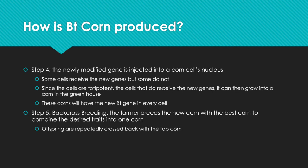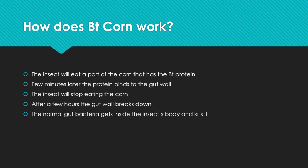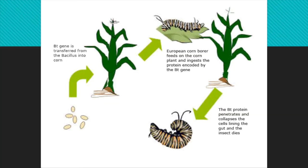How does BT corn actually work? The insect will eat the part of the corn that has the BT protein. A few minutes later, the protein binds to the gut wall of the insect, and the insect will stop eating the corn. After a few hours, the gut wall breaks down, and the normal gut bacteria gets inside the insect's body and kills it. This picture basically sums up the whole process — from the bacteria, it is transferred into the corn, the European corn borer eats it, and then the bacteria goes into the insect and kills it.